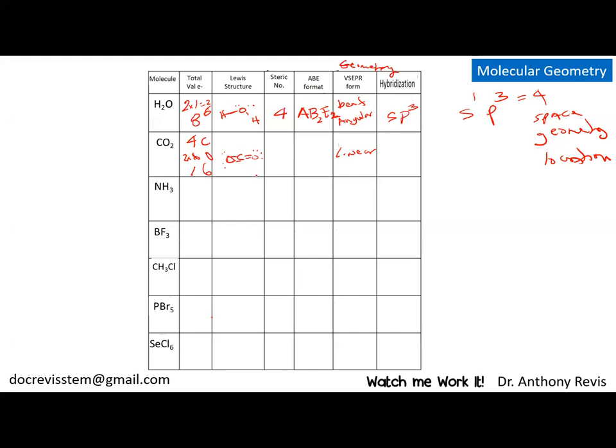Around this one, we have two steric regions that are occupied here. Two bonding regions are occupied here. And so this is going to be A for the central atom, B with two things around that central atom with no electrons, and the hybridization—I have two things, I have to account for, s and p, so it's sp hybridization around the carbon.